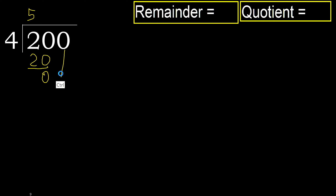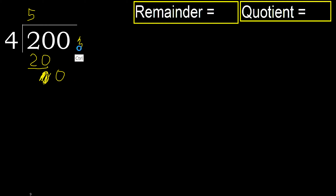Next, bring down the 0 on this side. 0 is less than 4, therefore that is not a number — finish it. Therefore complete: always complete with 0, because here we finish with this number.